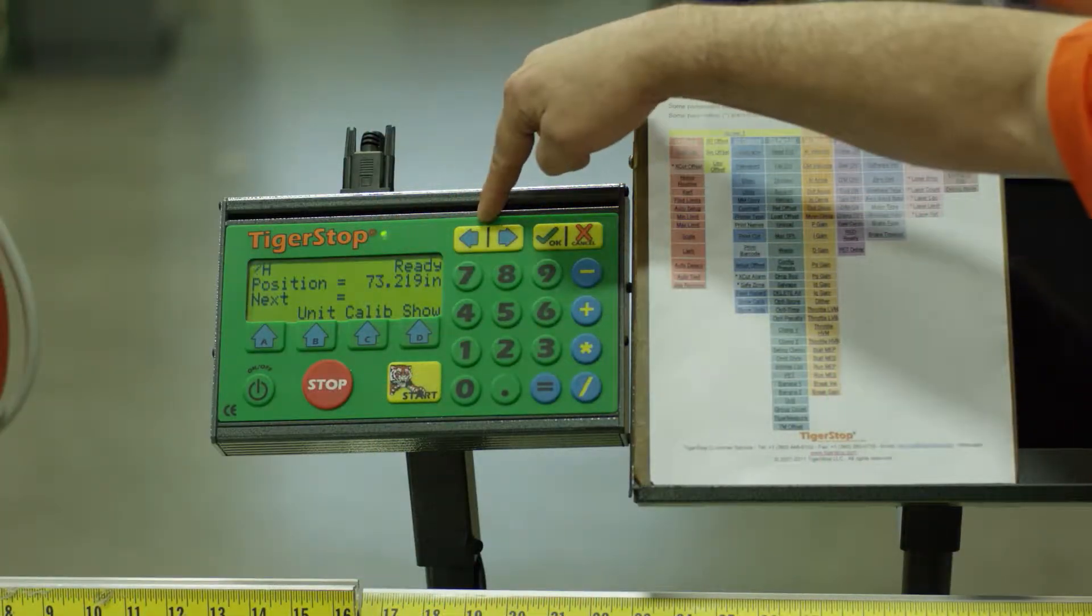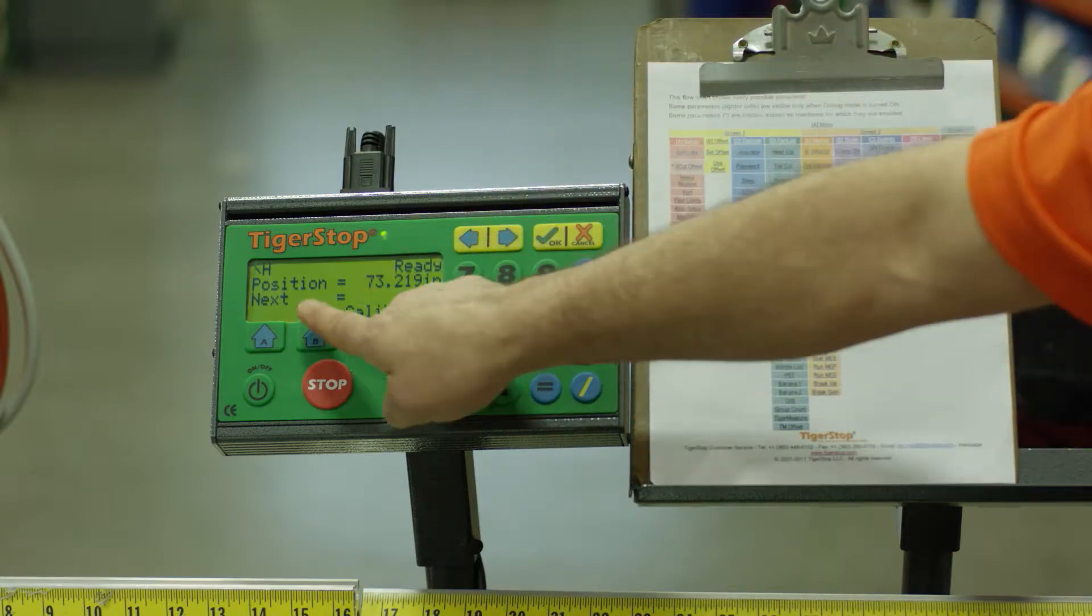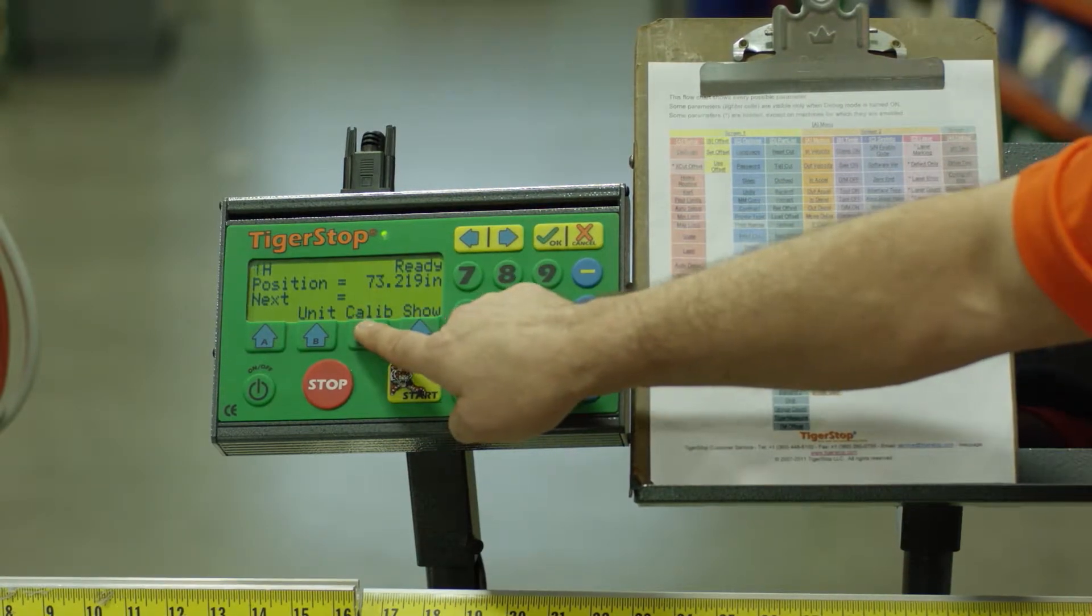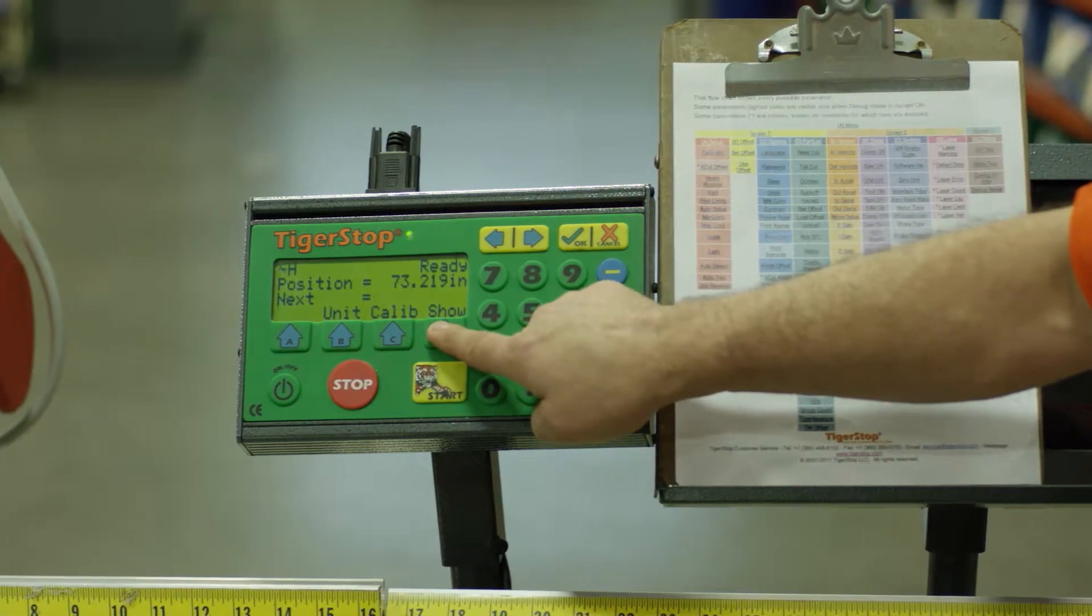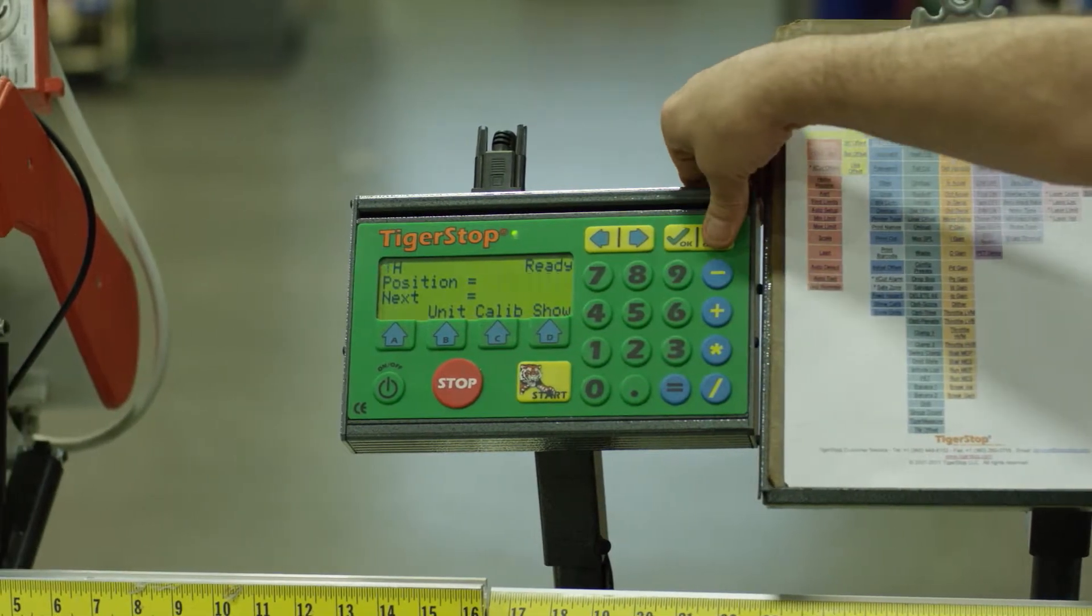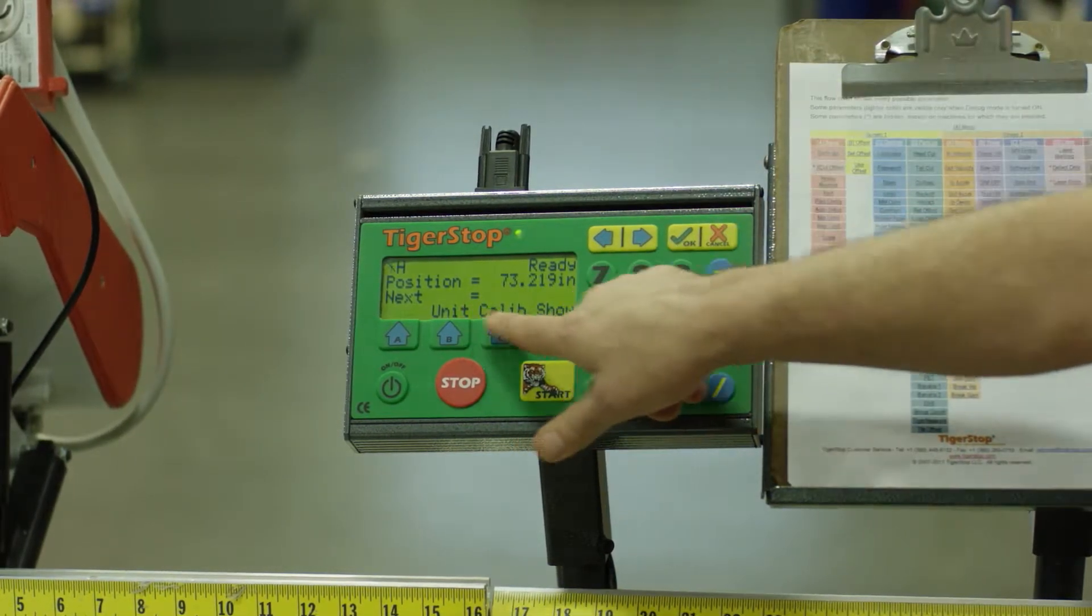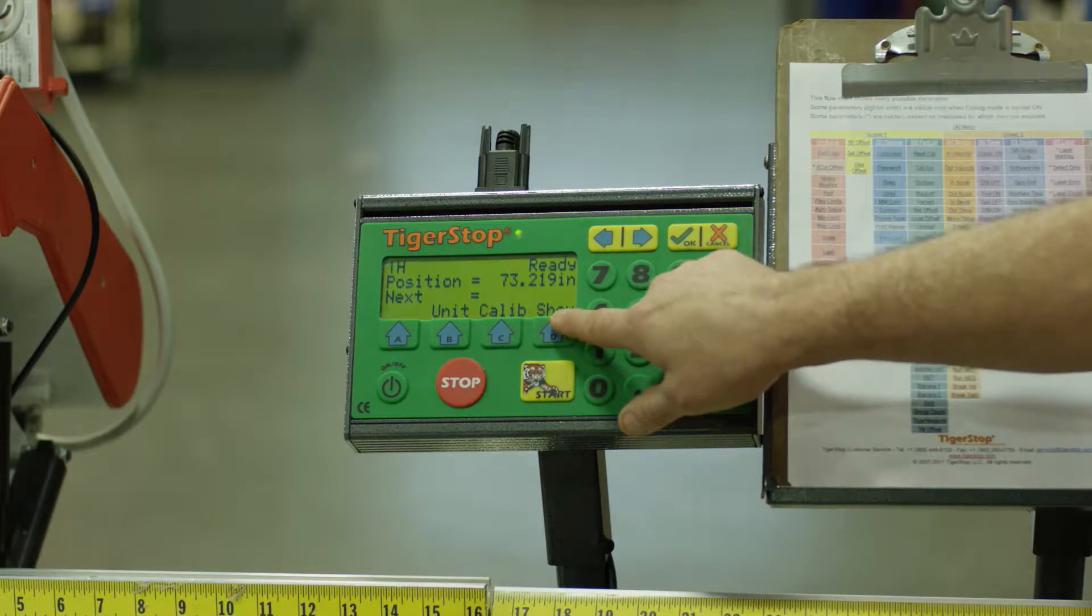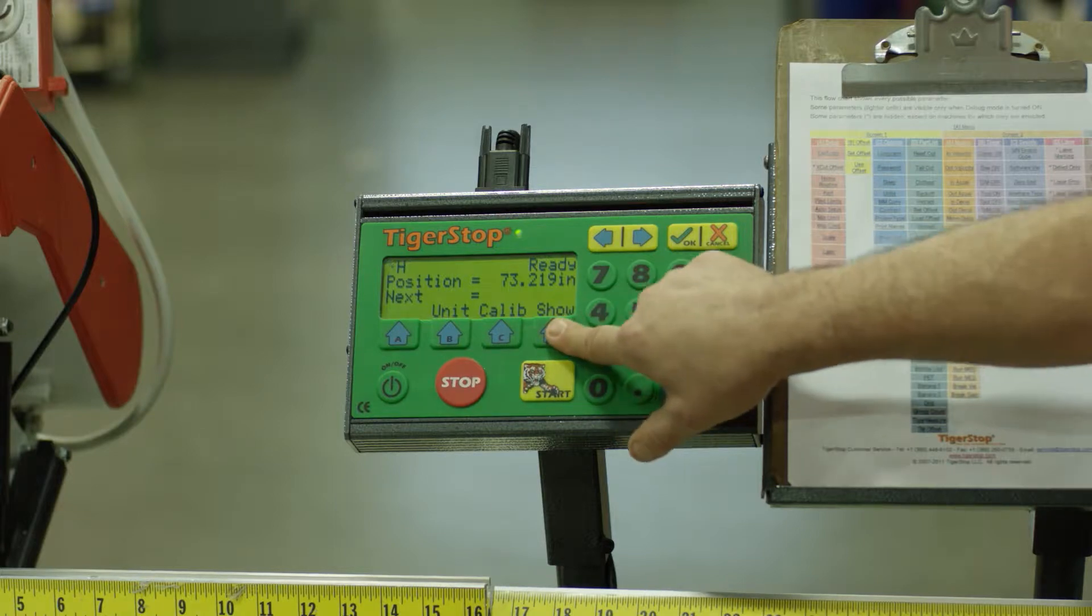The Tigerstop has what's called the ready screen. You should be seeing unit calibration or show or at bare minimum calibration and show. If not, press the cancel button three times and this screen will appear. To get into the menu flow or screens, you press the show button.